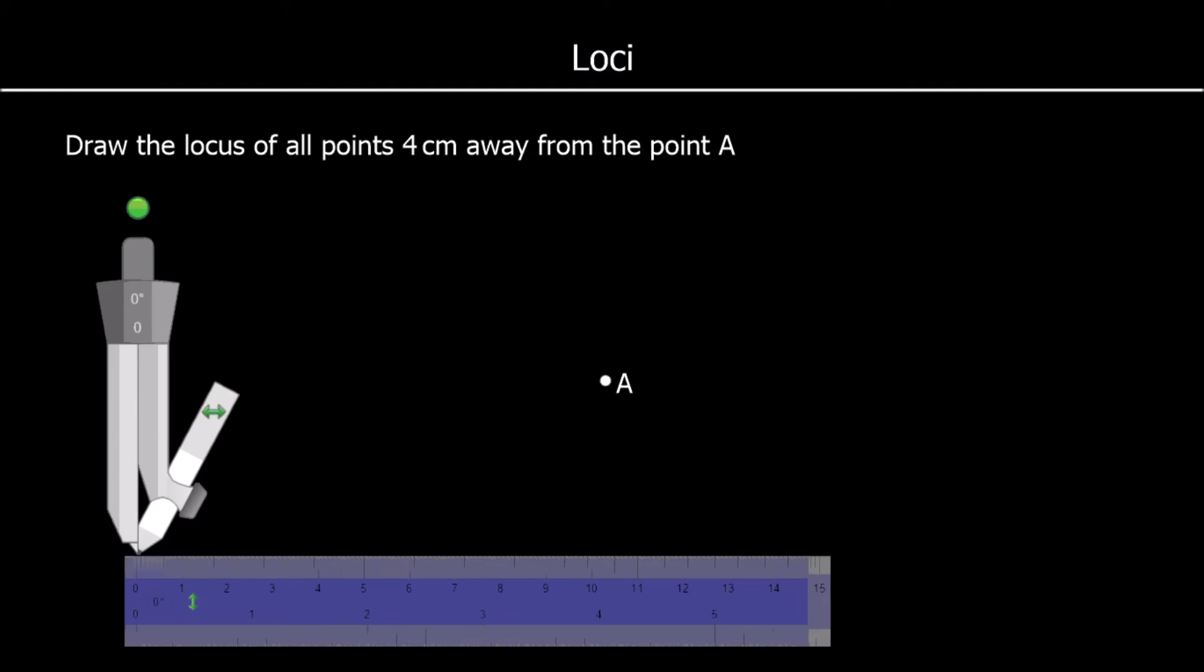Loci are a set of points that follow the same rule. Loci is the plural of locus. The question here says draw the locus of all points 4 cm away from the point A.